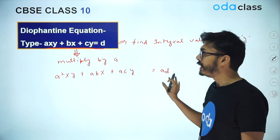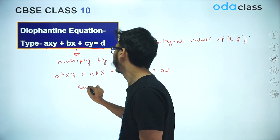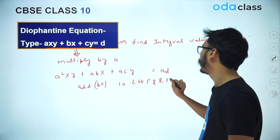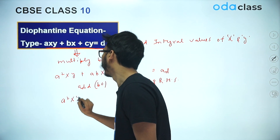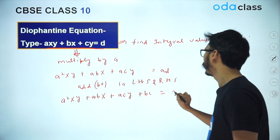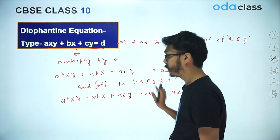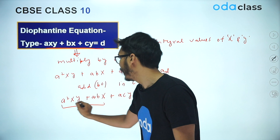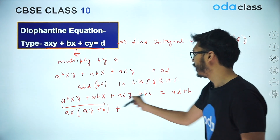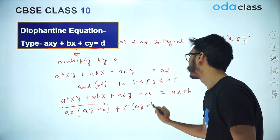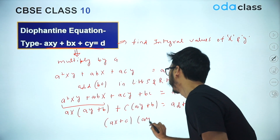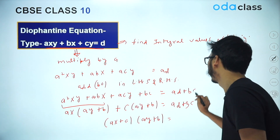Once you have done that, you add BC to both sides — that is B times C — on both the LHS and RHS. So you get A²XY plus ABX plus ACY plus BC on the left, and AD plus BC on the right. Now you can take AX common, leaving AY plus B, and then take C common, also leaving AY plus B.